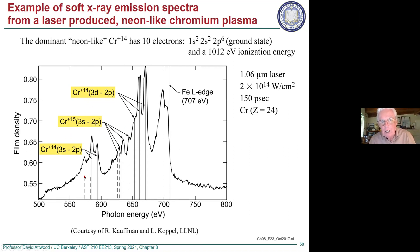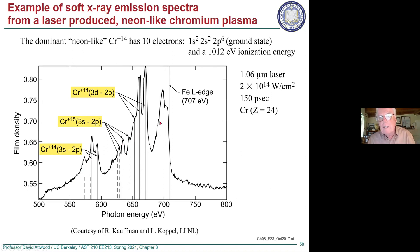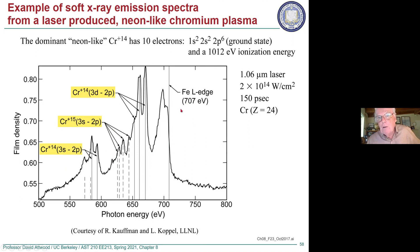The continuum emission — Bremsstrahlung from random electrons going near different ions at different impact parameters and therefore being accelerated more or less, plus the electrons having some energy spread — gives a broad continuum of all kinds of photon energies. Superimposed on that are the line emissions. The continuum continues above but is cut off by the iron filter.